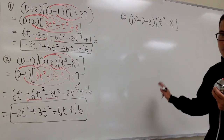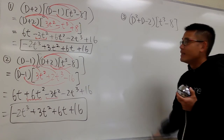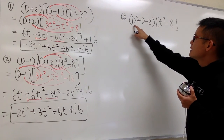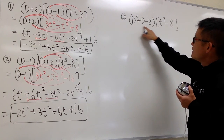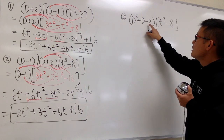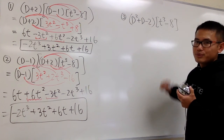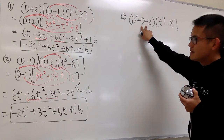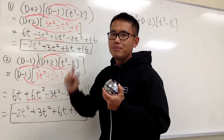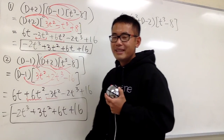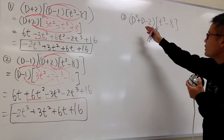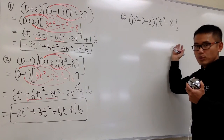Here is the third example. You may recognize this: D² + D - 2. In fact, this is the product of (D-1) times (D+2). Let me show you what this means based on this setup.